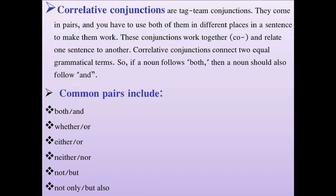Correlative conjunctions work to join two equal grammatical terms together. So if a noun follows one, a noun should also follow the other. The correlative conjunction pairs are: 'both...and', 'whether...or', 'either...or', 'neither...nor', 'not...but', and 'not only...but also'.